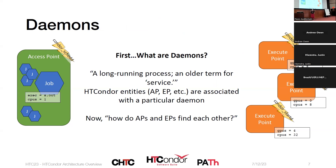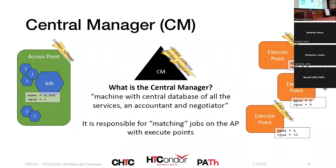You'll hear these daemon terms in talks today. So how do execution points and access points find each other? Through the central manager. The two main daemons associated with the central manager are the collector and the negotiator, potentially some others. The central manager acts as a central database of execution points, with a negotiator that helps match or assign jobs to execution points, and includes some accounting. It's the conduit connecting the access point and the execute points.